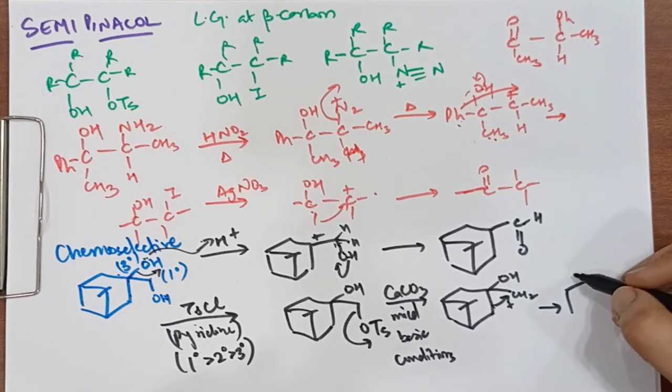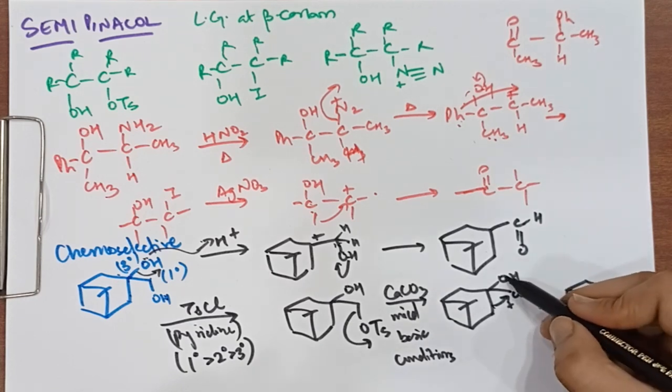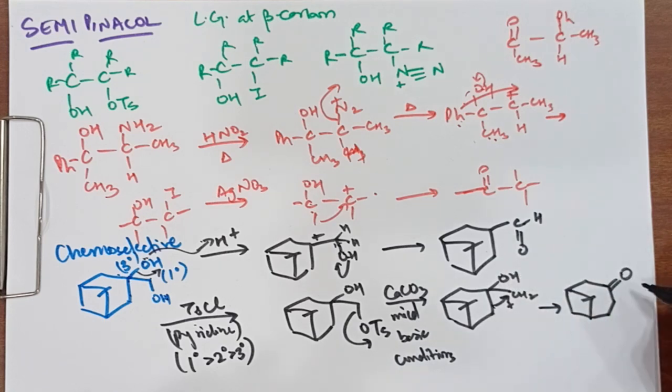We have a 6-member ring and it will become a 7-member ring. The OH will change and then form a double bond. So this will become our product.